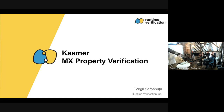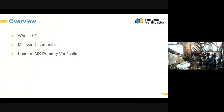Today I will skip over some of the slides because I don't need to introduce K. I will talk about Kaskmer, which is a tool for property verification for the MultiverseX blockchain. A normal presentation would go like this: first I will talk about what K is, then about our MultiverseX semantics, and then about Kaskmer, the tool that we are developing. This tool is still a prototype, but it's interesting regardless.